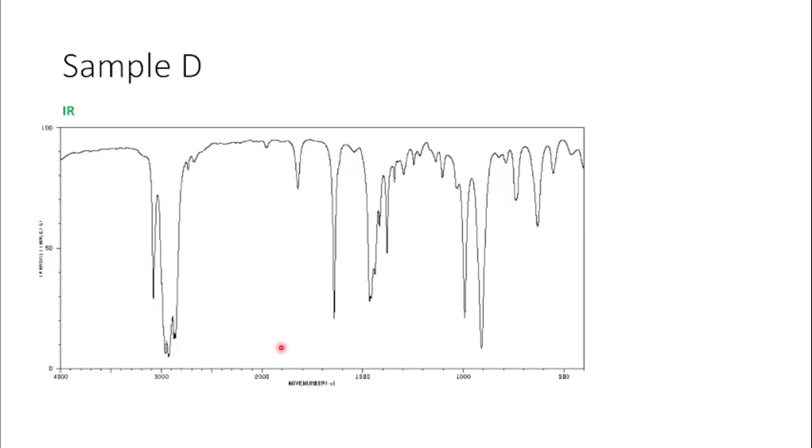The next thing we look at is our IR spectrum. And it doesn't matter if you work from the bottom up or the top down, remembering that from about 1500 downwards, we call this the fingerprint region. And I don't really tend to worry about anything in that region.